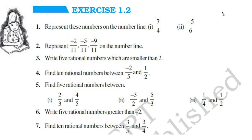Here is your exercise 1.2. There are 7 questions. Represent the numbers on a number line for questions 1 and 2. For question 3, find 5 rational numbers smaller than 2 — you can take 2 as 2 by 1, and numbers like 1, 0, negative 1, and so on are all integers as well as rational numbers. Questions 4 and 5 ask for 5 rational numbers between negative 2 by 5 and 1 by 2 — make denominators equal and multiply both numerator and denominator by a suitable number. Questions 6 and 7 are about finding rational numbers between two rational numbers. That is all for today's class. Do all these questions well. Have a nice time.